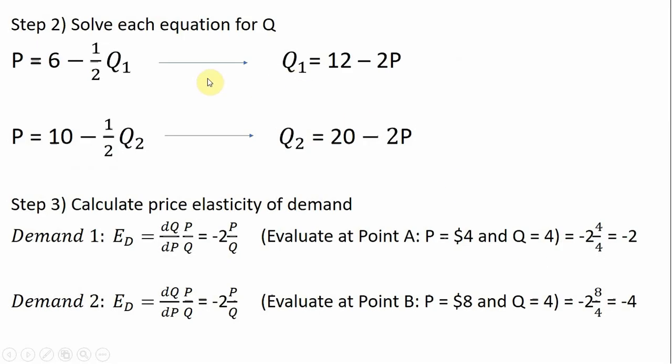Step two is we're going to solve each equation for Q. So multiplying everything through by two for both of these equations and then just moving some things around, we get Q1 equals 12 minus 2P and Q2 equals 20 minus 2P.